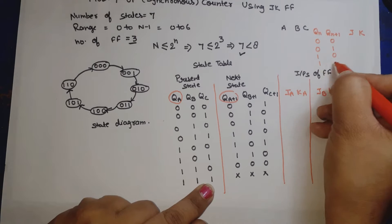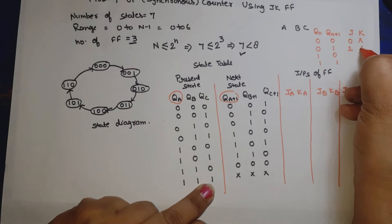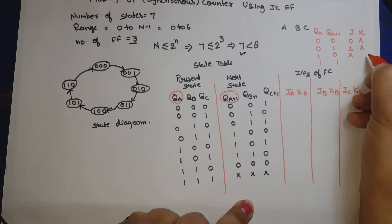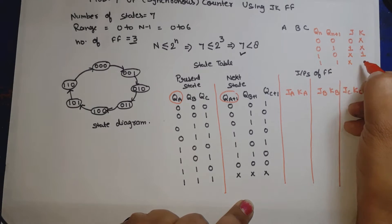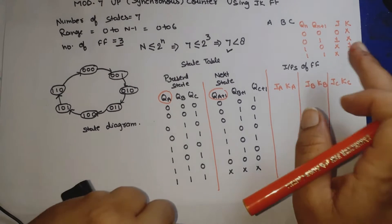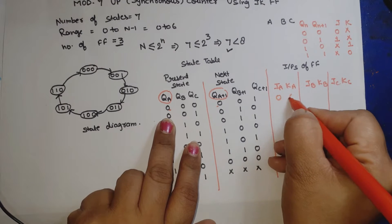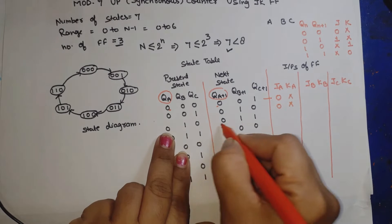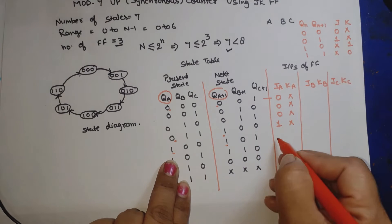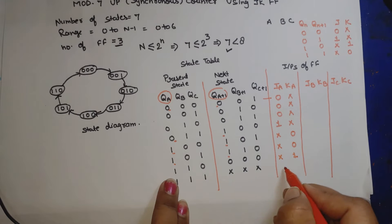Using the excitation table, we fill in the JA and KA columns. For the A flip-flop, comparing QA and QA+1 across all rows: rows with transitions 0→0 give 0,X; 0→1 gives 1,X; 1→1 gives X,0; 1→0 gives X,1. The don't care row (111) gives X,X for JA and KA.